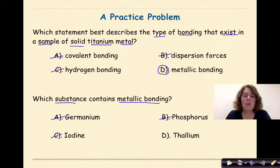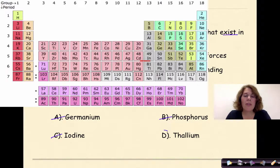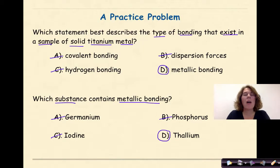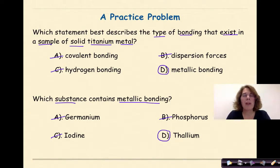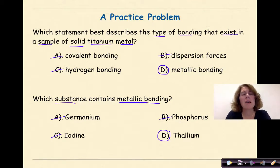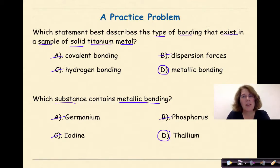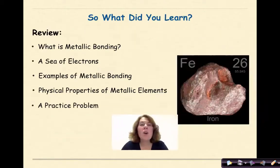Instead, we're going to choose thallium, which is definitely a metal on the periodic table — if you took the time to look it up on Table S and find the atomic number, locate it on the periodic table, you'd see there's thallium.